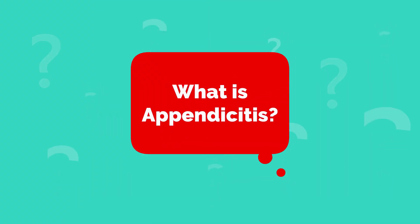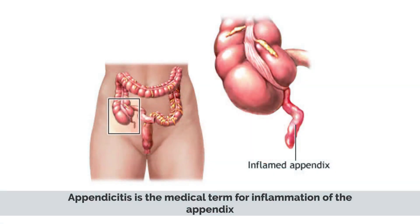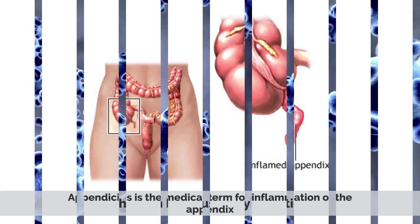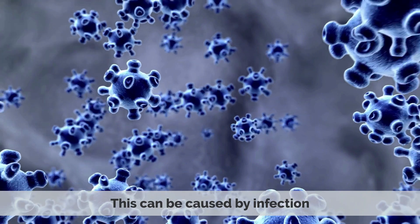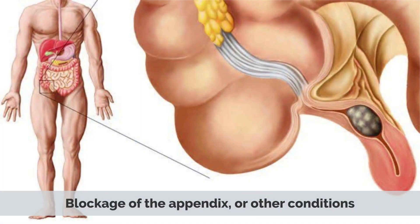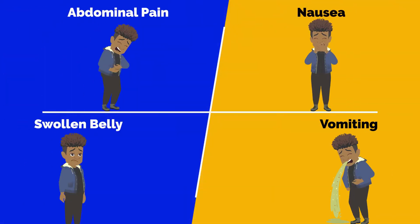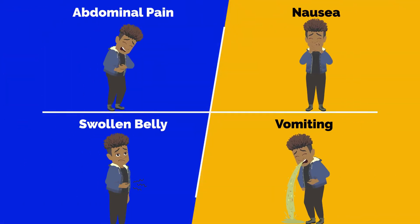What is appendicitis? Appendicitis is the medical term for the inflammation of the appendix. This can be caused by infection, blockage of the appendix, or other conditions. Symptoms of appendicitis include abdominal pain, nausea, swollen belly, and vomiting.